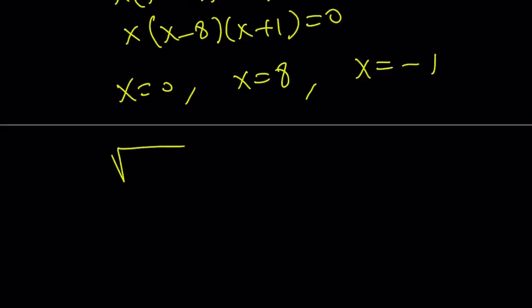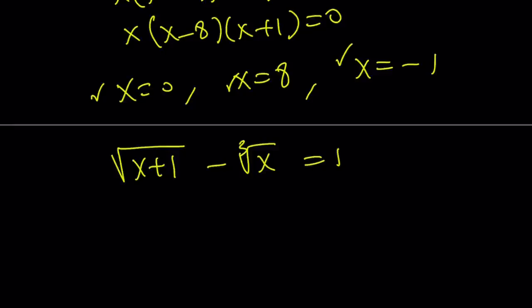Our original equation is square root of x plus 1 minus the cube root of x equals 1. If you replace x with 0, you get 1 minus 0 equals 1 — true. So 0 checks. If you replace x with 8, you get 3 minus 2 equals 1 — that also checks. If you replace x with negative 1, 0 minus negative 1 is also positive 1 — so it checks too. So all three solutions check, which is really cool. When I show you the graph, you'll have a better idea.